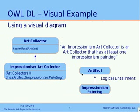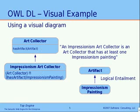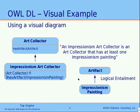Now, if we look at it from a visual diagram, we see that the Impressionist art collector being defined as the conjunction of those two class descriptors means that Impressionist art collector must be a subclass of art collector, which means that every Impressionist art collector must also be an art collector. Since art collectors have their artifacts of being of type artifact, it follows that Impressionist painting must also be of type artifact in order to comply with that axiom.